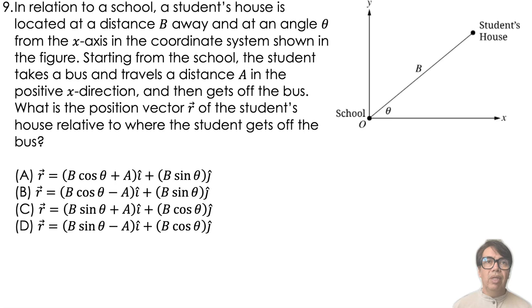In relation to a school, a student's house is located at a distance B away and at an angle theta from the x-axis in the coordinate system shown in the figure.